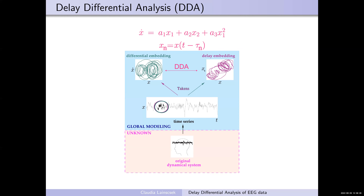There are two different ways of embeddings. There is differential embedding, where you take the time series and the derivative of the time series and you get this pattern — from this segment of the data. And then you can also create other types of embeddings.